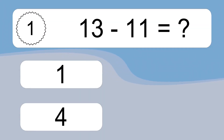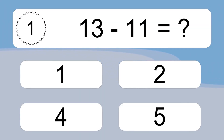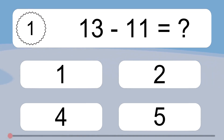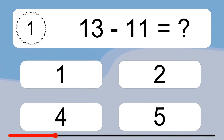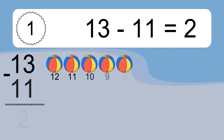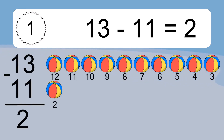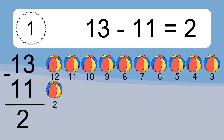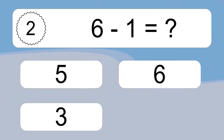13 minus 11 equals what? 13 minus 11 equals 2. Let's count it: 12, 11, 10, 9, 8, 7, 6, 5, 4, 3, 2.